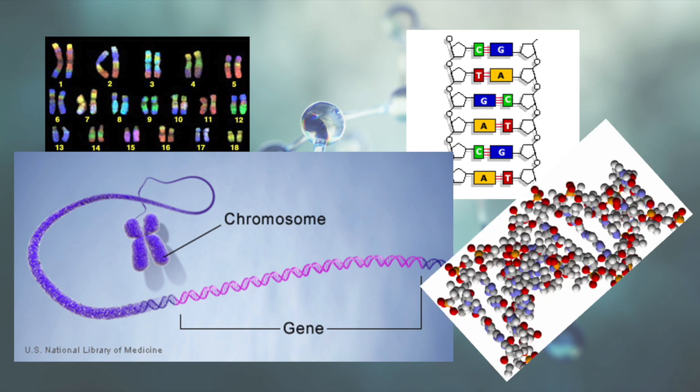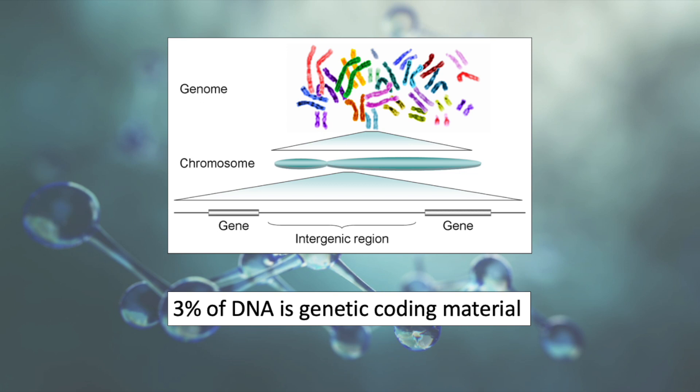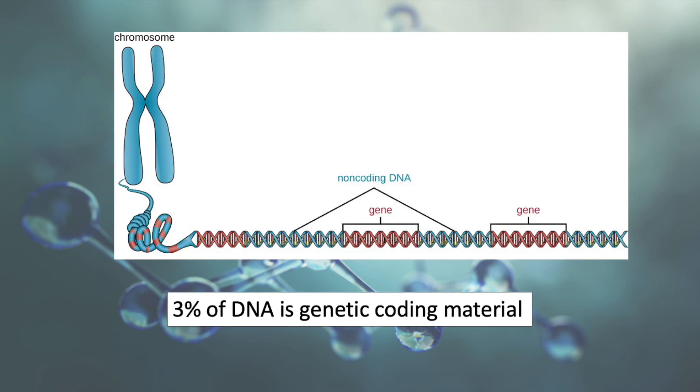For those of you not keeping track at home, this means that out of our 3 trillion base pairs, our genes make up an astonishingly small 3% of our total genome and exist interspersed between millions of non-coding sequences.